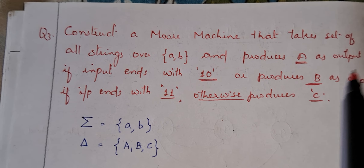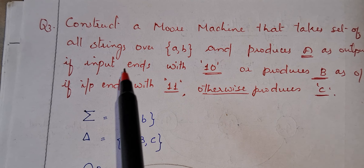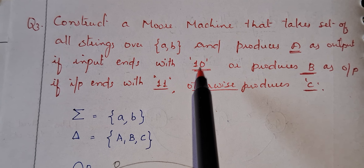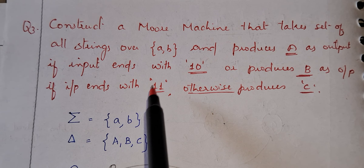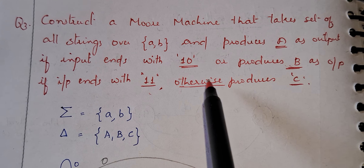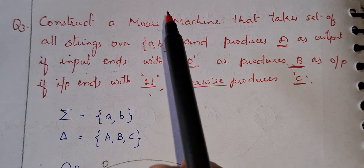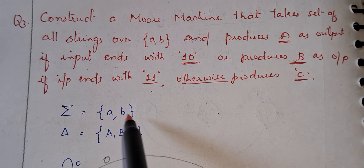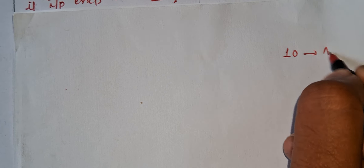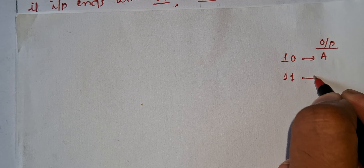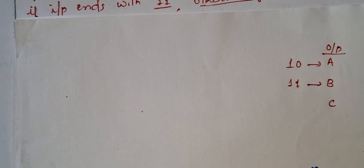The next problem is: construct a Moore machine that takes the set of all strings over {a, b} and produces output A if the input ends with '10', produces output B if the input ends with '11', and otherwise produces output C. Our output alphabet is {A, B, C} and input alphabet is {0, 1}.